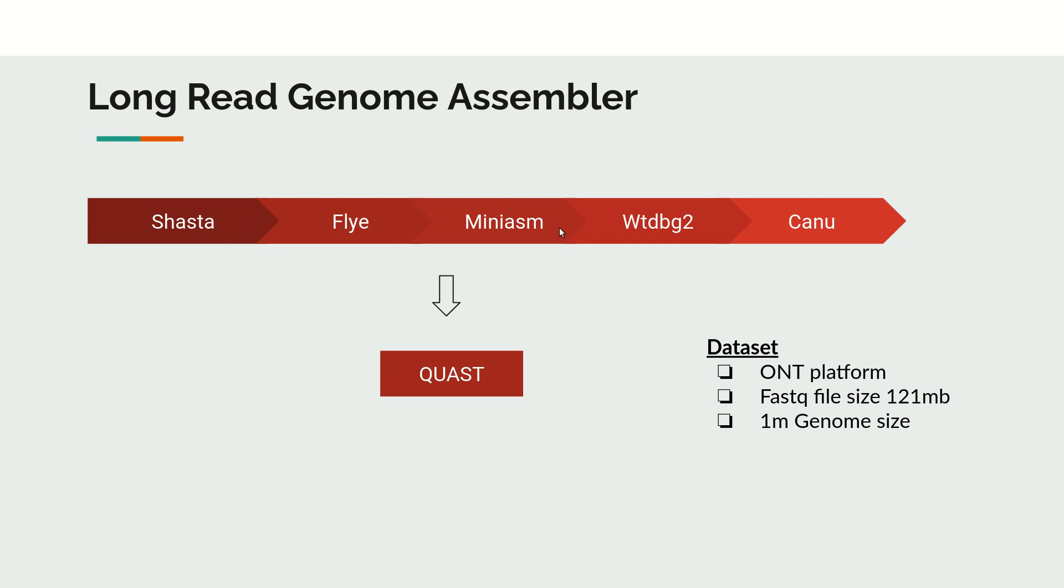At the end, we will compare all the assembly output results using QUAST. QUAST is an assembly statistics tool which will help us to see the various assembly parameters, and we can compare each of the tools in terms of total assembly size, NG50 value, and those kinds of things.